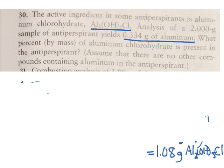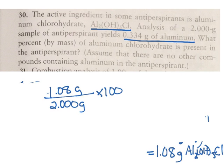The mass of my part is the aluminum chlorohydrate, so I have 1.08 grams. The mass of my whole was given in the problem statement, the whole antiperspirant. I multiply it by 100 and I end up getting about 54 percent.